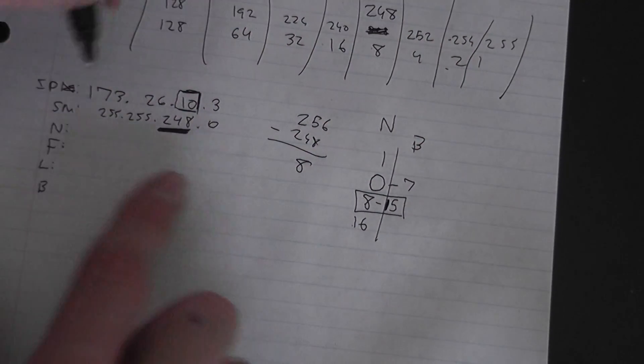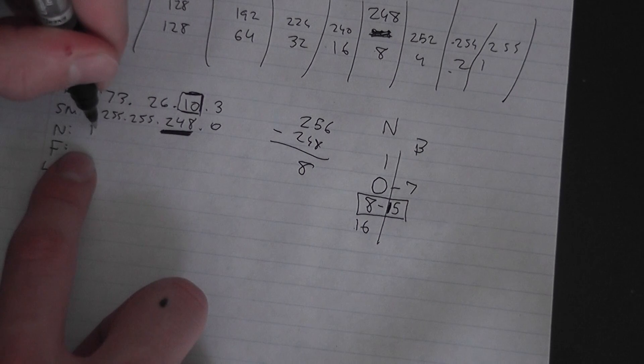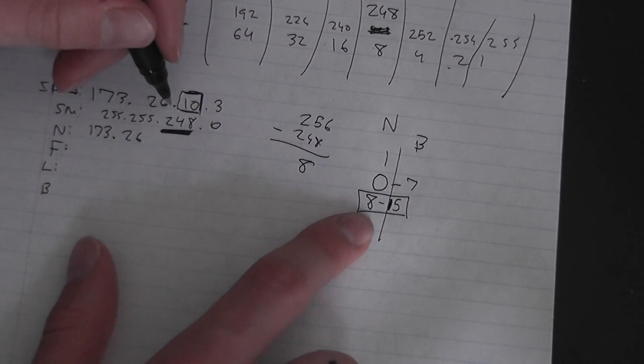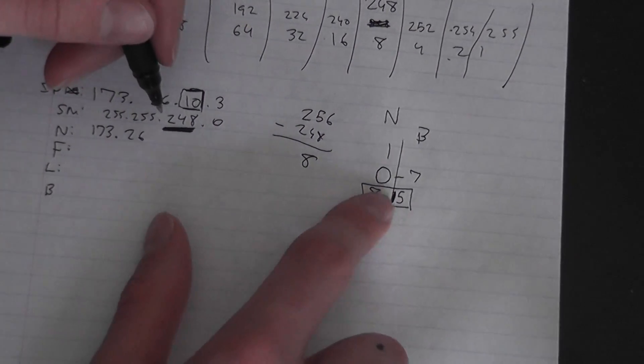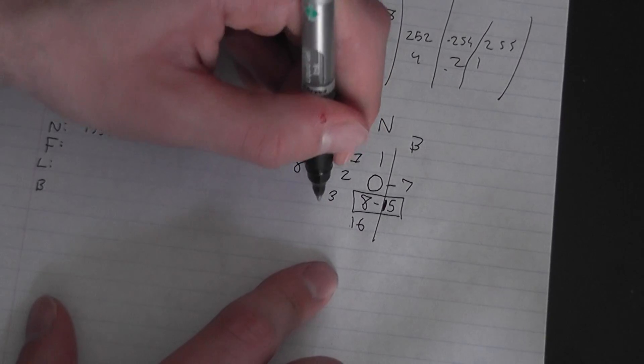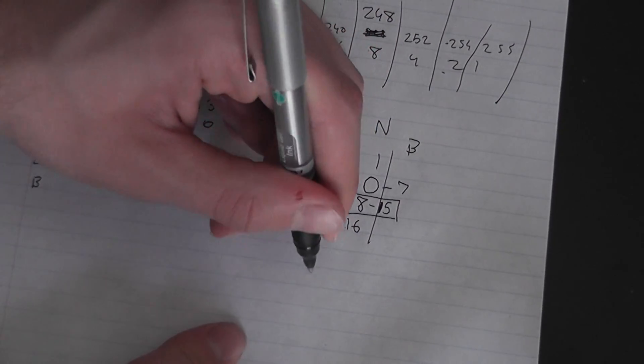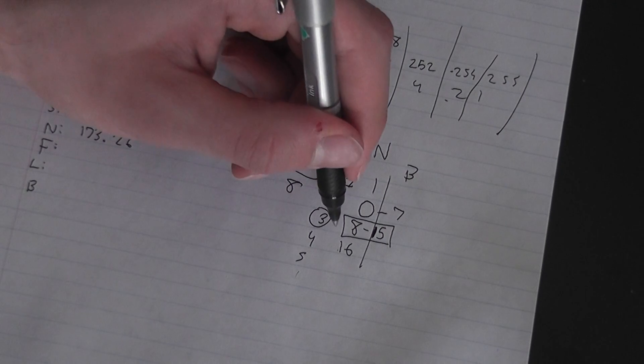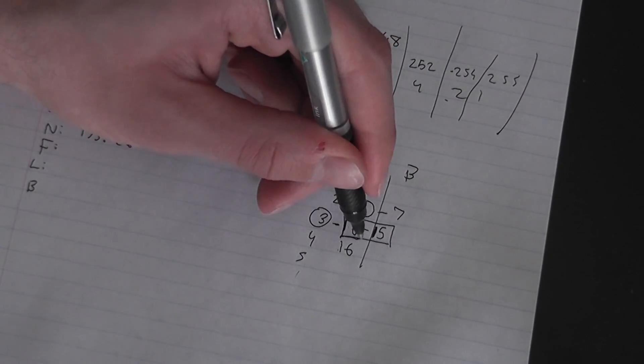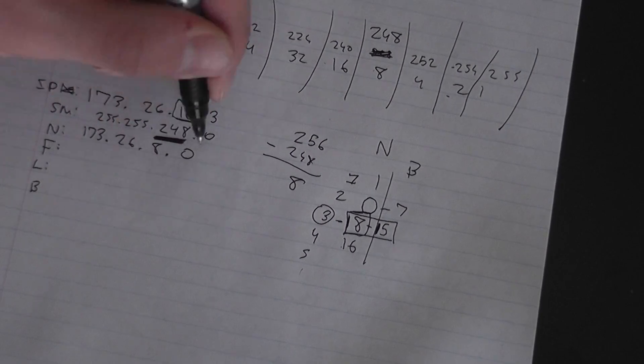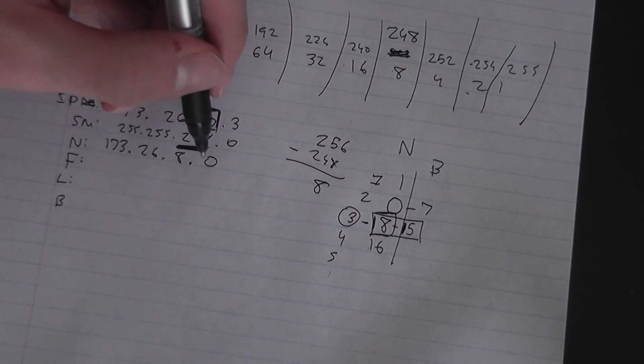So now your network would be 173.26 - now you replace that 10 because it falls under this range. This is the third subnet. The network is 8.0 because network is 0.